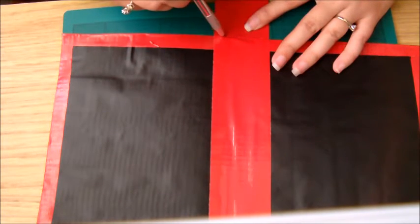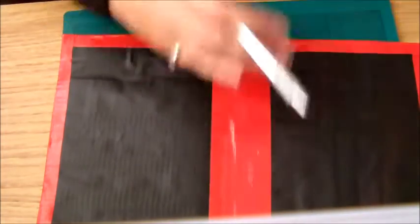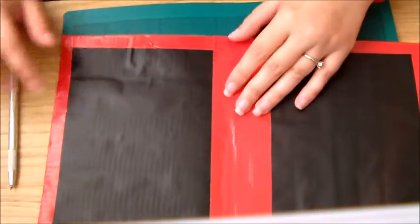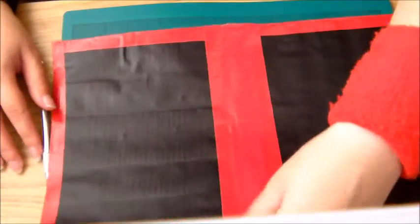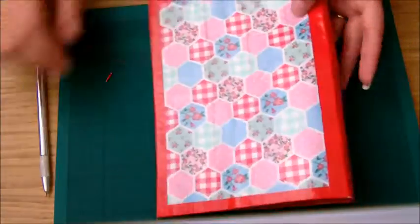So you just trim that off. And as you can see it's starting to take shape. And it just folds over like this. And then we just need to add the pouch and the strap and we're done. So you'll find that in part two.